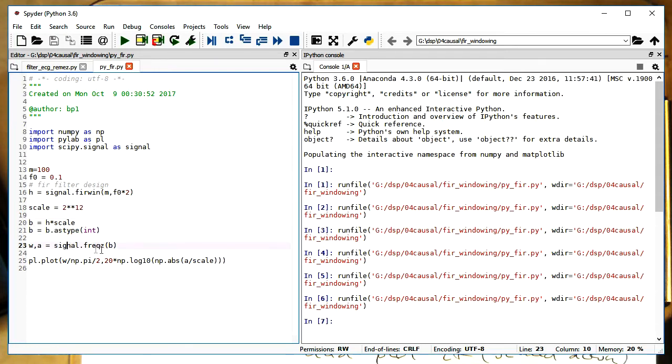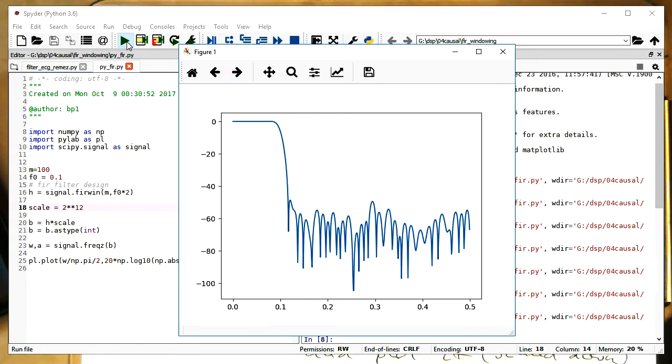In this case, I use the scipy library command frequency Z of B. And then I just plot this here and I just scale it back down. If we have 12-bit, let's see how the performance looks like.